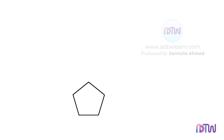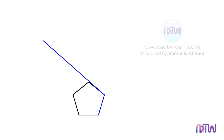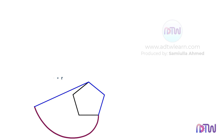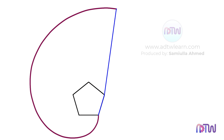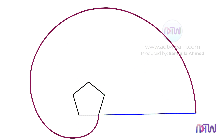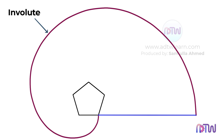Suppose there is a pentagonal shape that is wound with a rope, whose length is equal to the perimeter of the pentagon. When we unwind the rope, the path taken by the endpoint of the rope while unwinding is known as the involute.